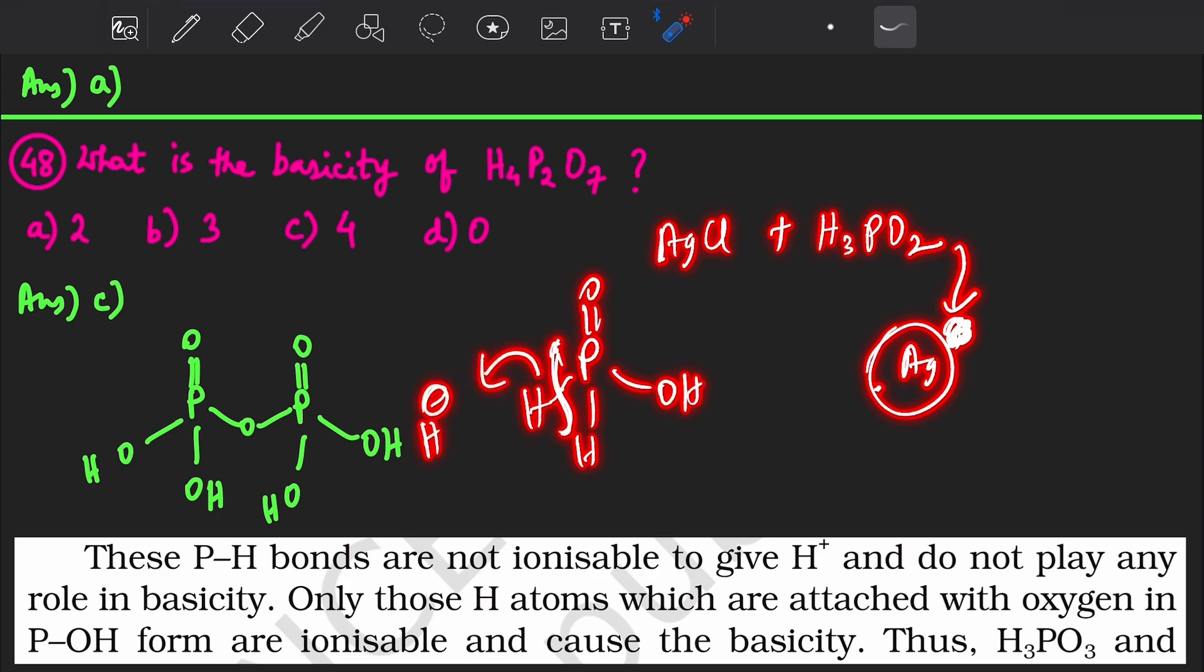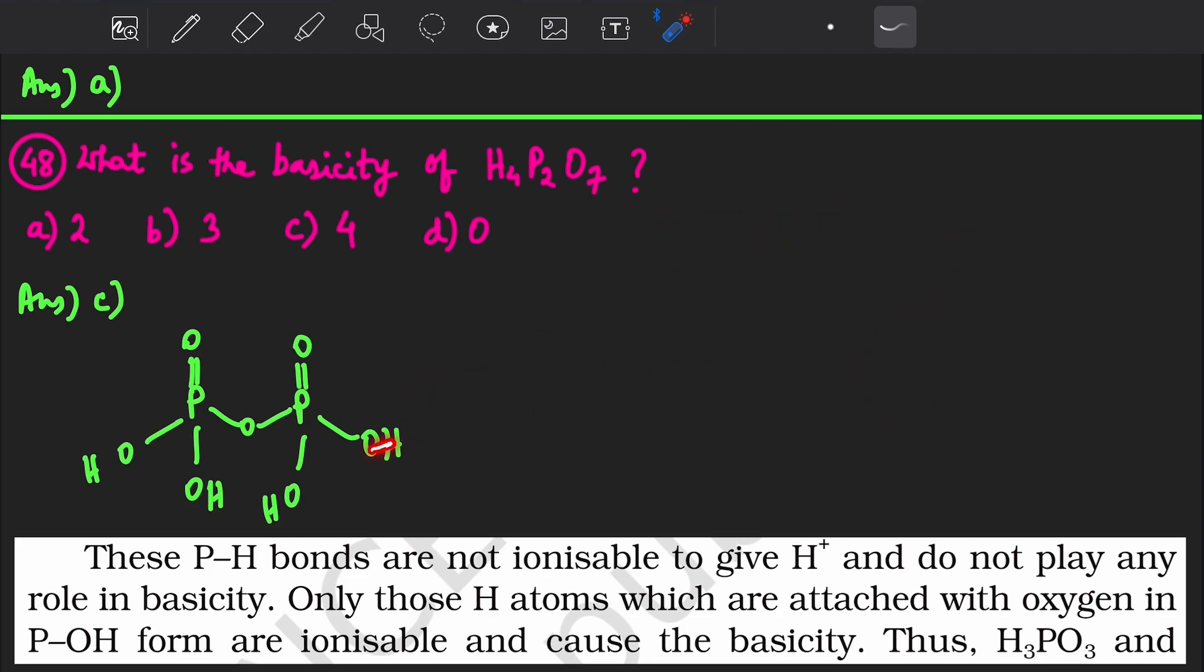In P-H bond, H- is released and the electron goes to H. But in P-OH it is the opposite - H+ gets released and O- gets formed here. That's why basicity means the number of P-OH bonds you have.